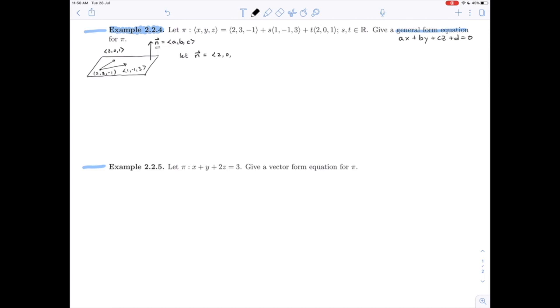So (2, 0, 1) crossed with (1, -1, 3), and so I'll recopy them here going down: 2, 0, 1, recopy the first two; 1, -1, 3, 1, -1, bar out the first line and we've got here so 0 minus minus 1 is going to give me 1. 1 minus 2 times 3 is going to give me -5, and -2 times or -0 so I get just -2. So there's our normal vector.